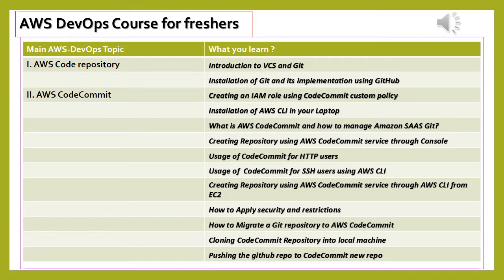AWS Code Repository — Introduction to VCS and Git. What you will learn: One, what is a version control system? Two, how multiple version control systems were used. Three, what are the latest VCS benefits? Four, how Git works. Five, what are the benefits we get by using Git on projects? Installation of Git and its implementation using GitHub.